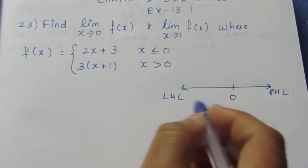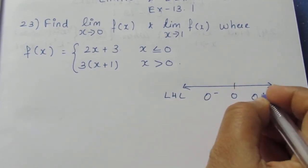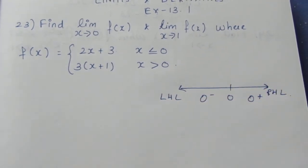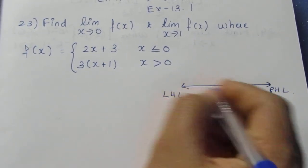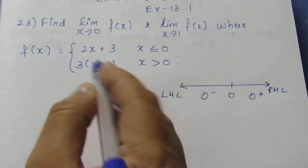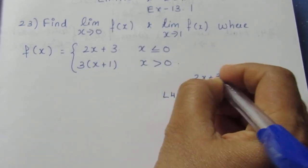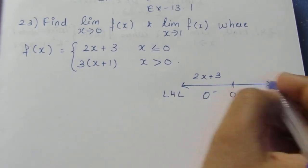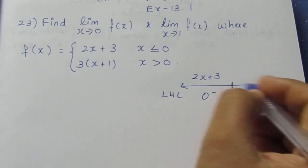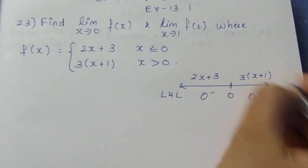If you look at the left side, 0 minus means x is negative — approaching from the left. The right side is 0 positive, approaching from the right. For the left-hand side where x is less than 0, f(x) equals 2x plus 3. For the right-hand side where x is greater than 0, f(x) equals 3 into (x plus 1).